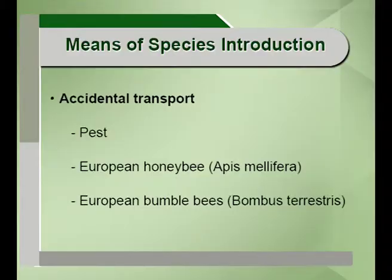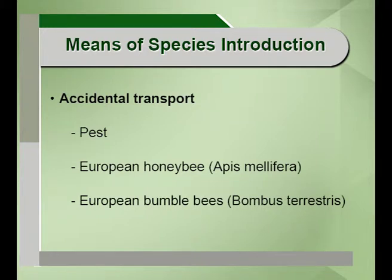Another reason for species introduction is accidental transport — for example, weed species. In India, Parthenium hysterophorus was introduced along with wheat seeds. Weeds introduced this way are very difficult to separate from crop plants because weeds often mimic crop plants, making them difficult to manage. Parthenium hysterophorus, for instance, is very difficult to manage in India.